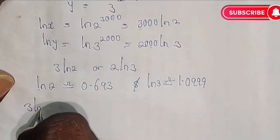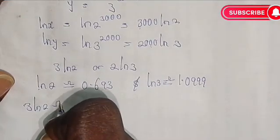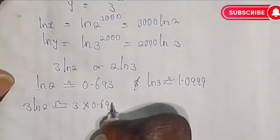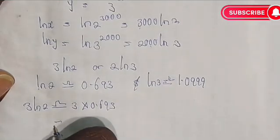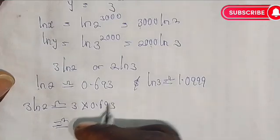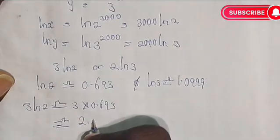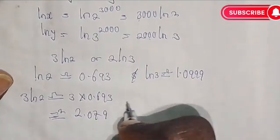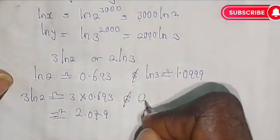3 times the natural log of 2 equals 3 multiplied by 0.693, which gives us an approximate value of 2.079.